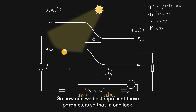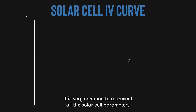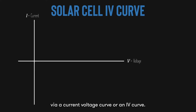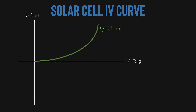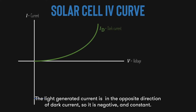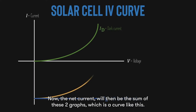So how can we best represent these parameters so that in one look we can know all of the characteristics of the solar cell? In the solar cell world, it is very common to represent all these parameters via a current-voltage curve, or an IV curve. We remember from chapter 3 that in a PN junction the dark current looks something like this. The light-generated current is in the opposite direction of the dark current, so it is negative and constant. The net current will then be the sum of these two graphs, which is a curve like this.